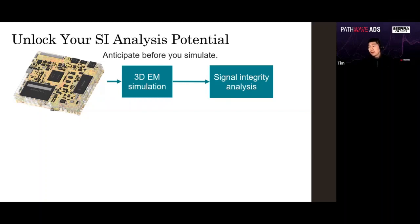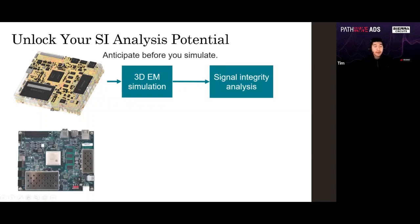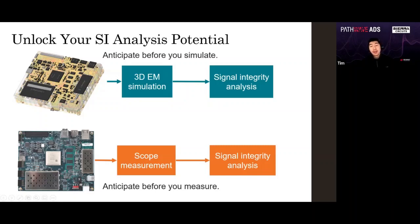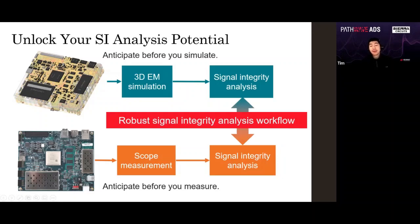If you're using Sierra Circuits as a fabricator, you know it's very important to fabricate your board — otherwise you're just living in simulation world and nothing is really real. It only gets real when it's fabricated. We'll also need to do measurements on the fabricated board — a scope measurement — and then you have another signal integrity analysis block. Combining the two together gives you a robust signal integrity analysis workflow.